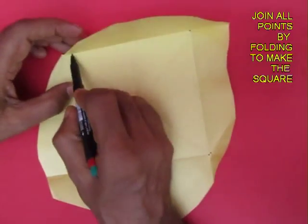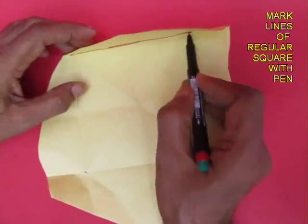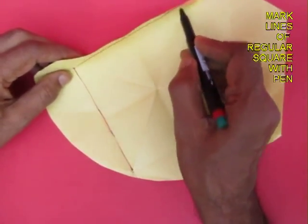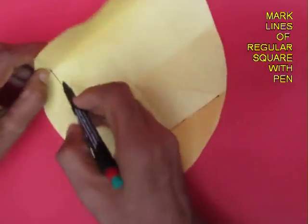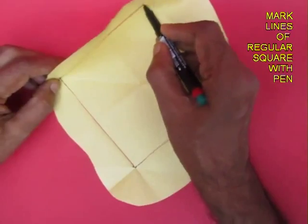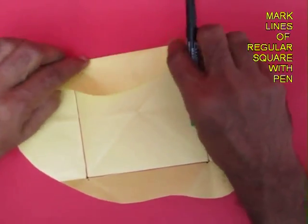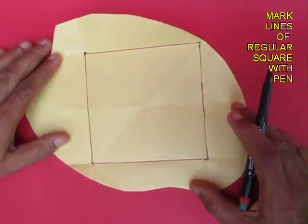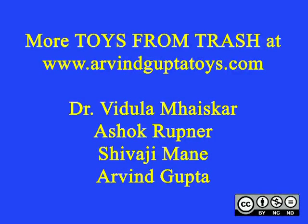Once you make these creases, mark these four lines with a pen and you would have made a very regular square from an irregular piece of paper.